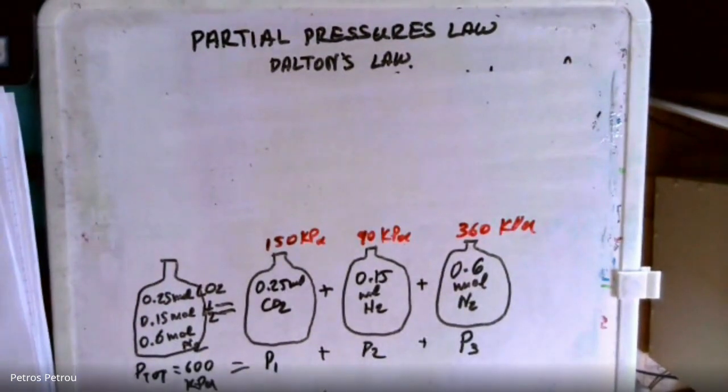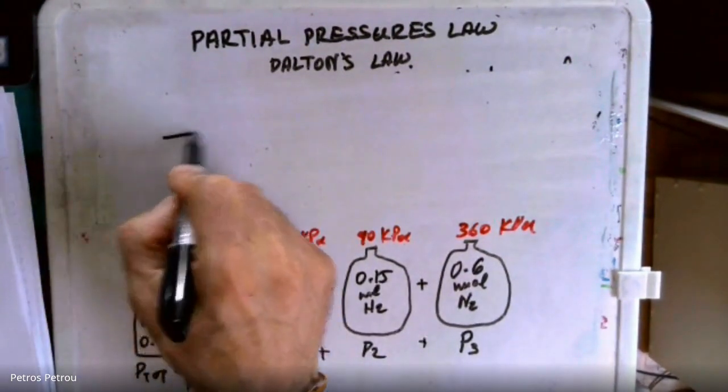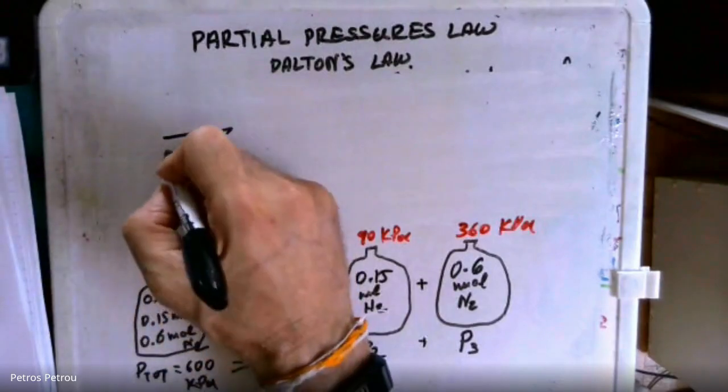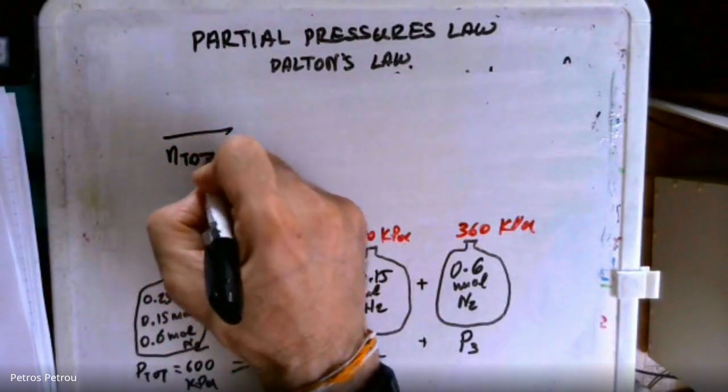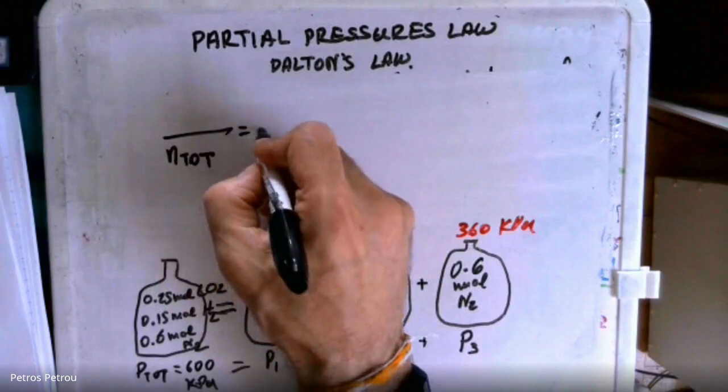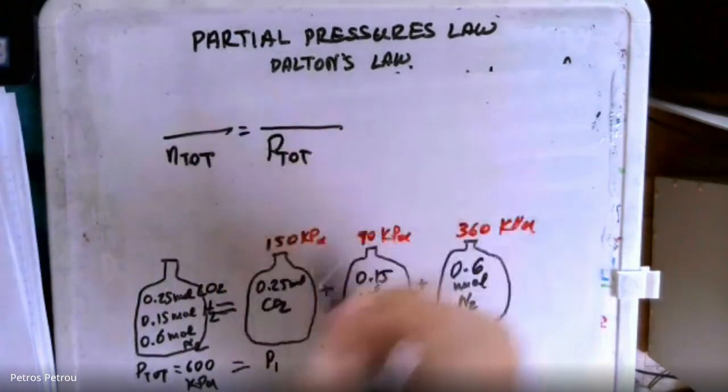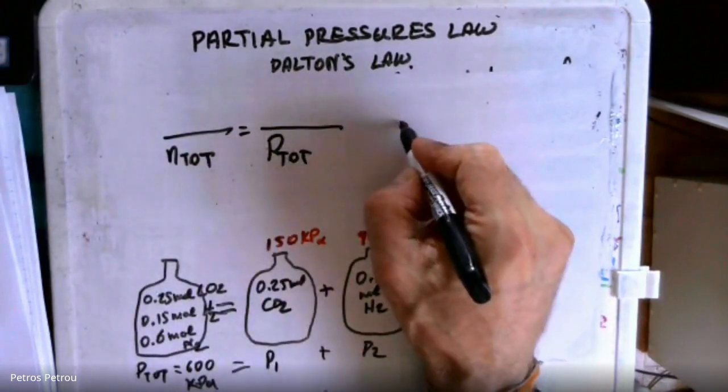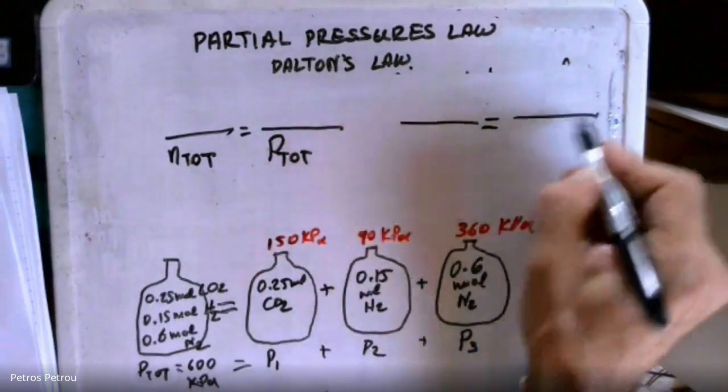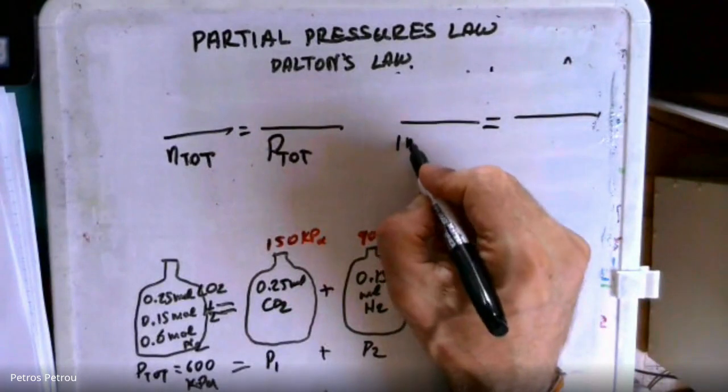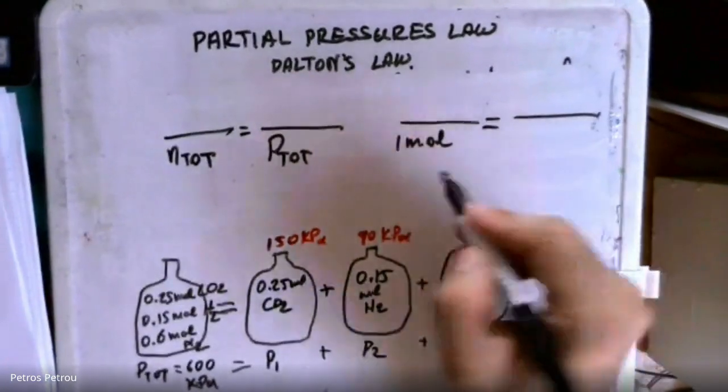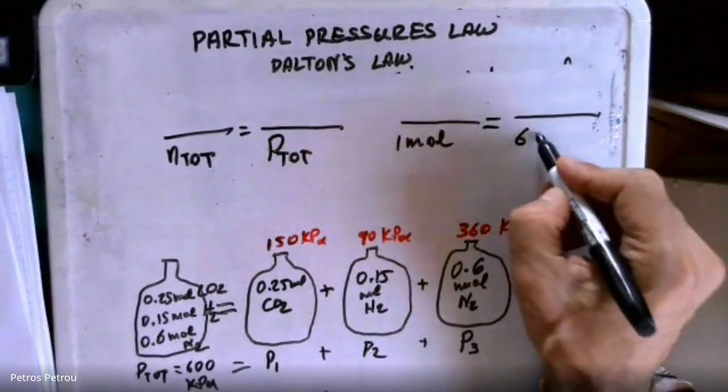So you have that in one mole, a total, the n total here is like one mole in this case. Your total pressure is going to be 600 kilopascals. Doing this right here for the values that we have, I have one mole total is 600 kilopascals.